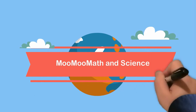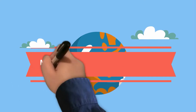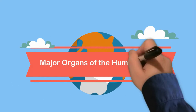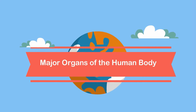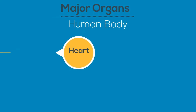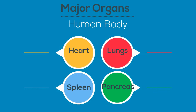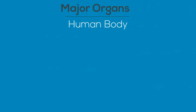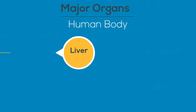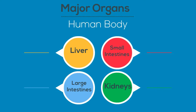Welcome to MooMooMath and Science. In this video I would like to talk about the major organs of the human body. I will cover the heart, the spleen, the lungs, the pancreas, the liver, the large intestines, the small intestines, and the kidneys.